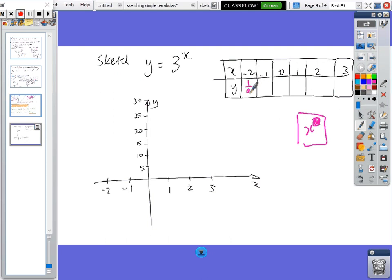Okay, you should have got 1 ninth, 1 third, 1, 3, 9, 27.